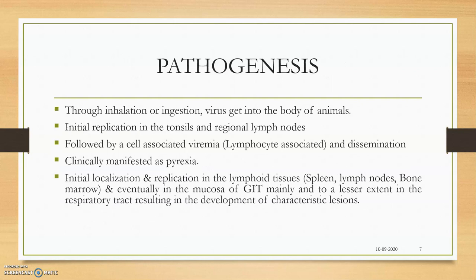Pathogenesis: Through inhalation or ingestion, the virus enters the body and undergoes initial replication in the tonsils and regional lymph nodes, producing numerous viral copies. Lymphocyte-associated viraemia leads to dissemination via the lymphatics, draining into the venous system, resulting in systemic viraemia. This produces pyrexia, with subsequent localization and replication in lymphoid tissues and then primarily in the GI tract.